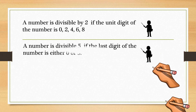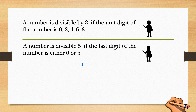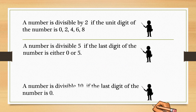A number is divisible by 5 if its last digit is either 0 or 5. 1,87,650 is divisible by 5 as its last digit is 0. If the last digit of the number is 0 then it is divisible by 10. For example, 77,650 is divisible by 10 as its last digit is 0.